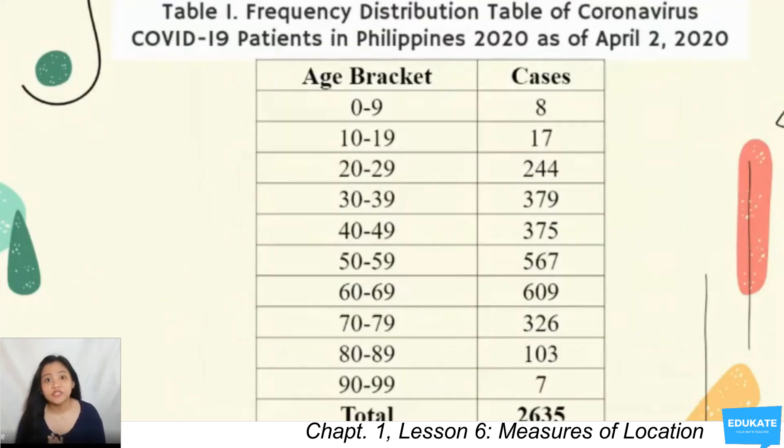Tabulating the graph, we have this frequency distribution table. Notice that the highest age bracket is 90 to 99 and the lowest is 0 to 9, with the age brackets of 60 to 69 having the highest number of cases.